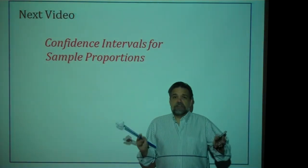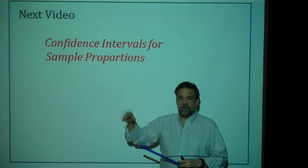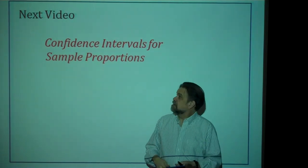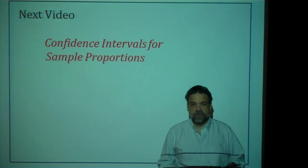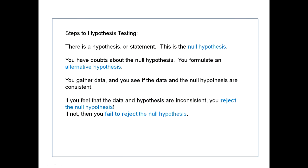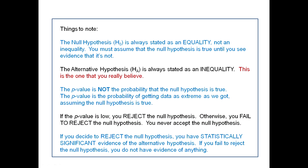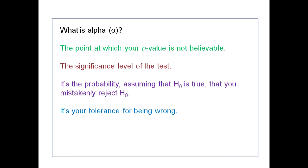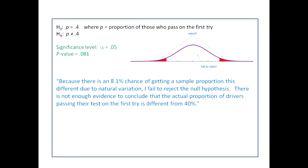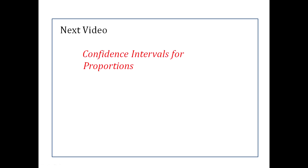After you reject the null hypothesis and say P is not equal to 0.85 or 0.4 or whatever it was, the next question is: okay, what is P then? That's the next video — confidence intervals of sample proportions. I'll see you then.